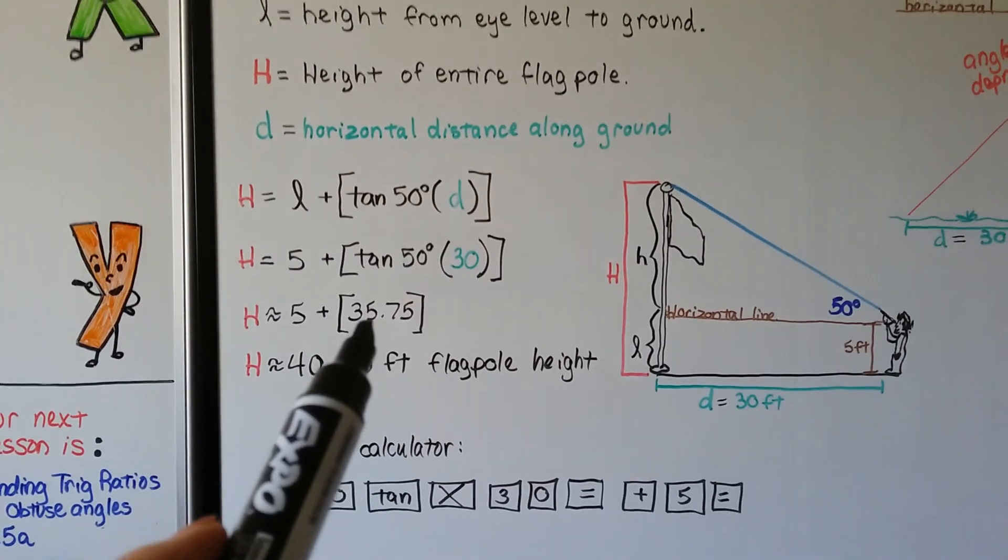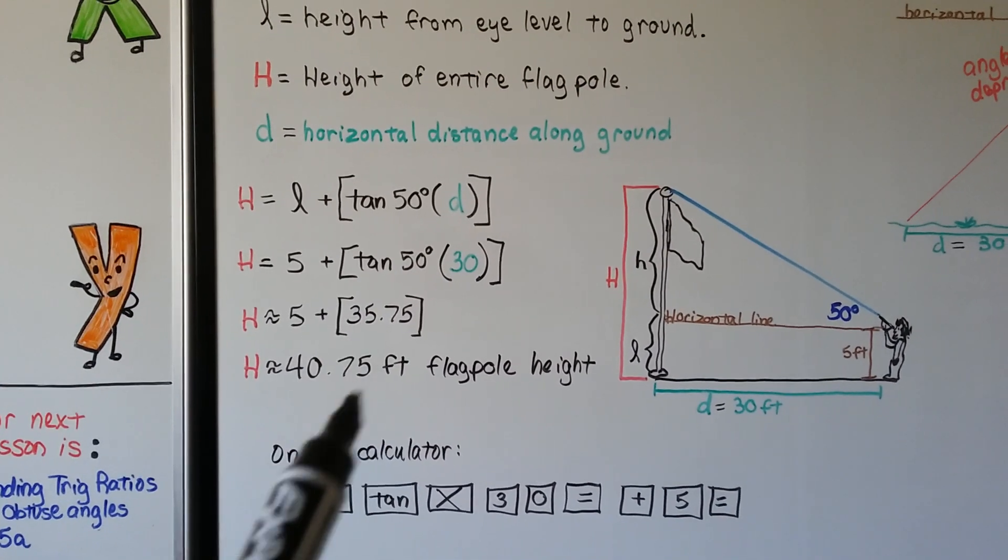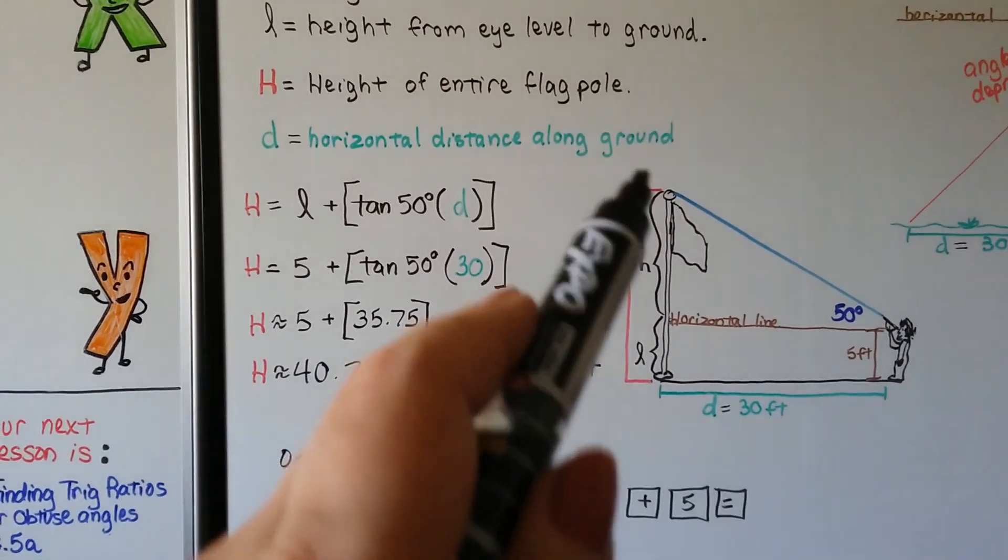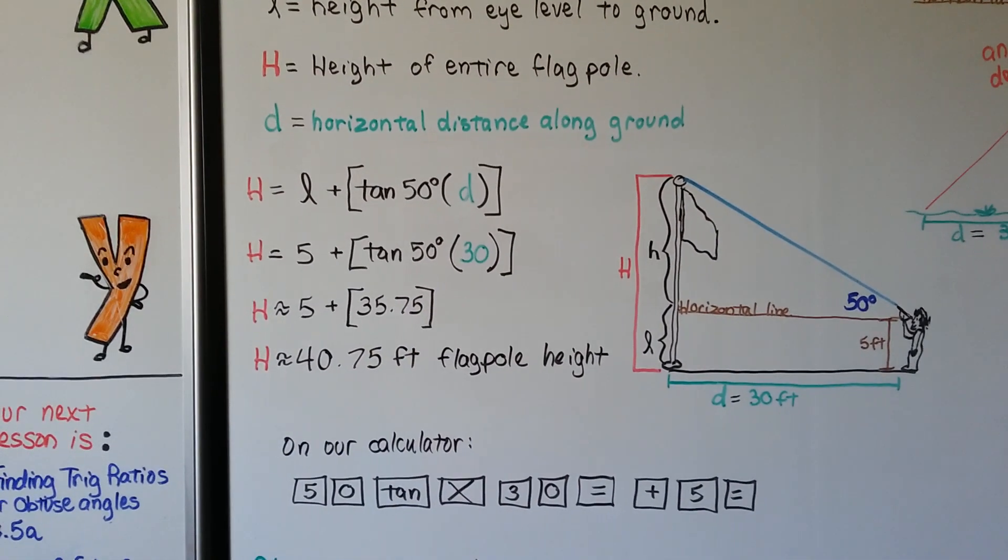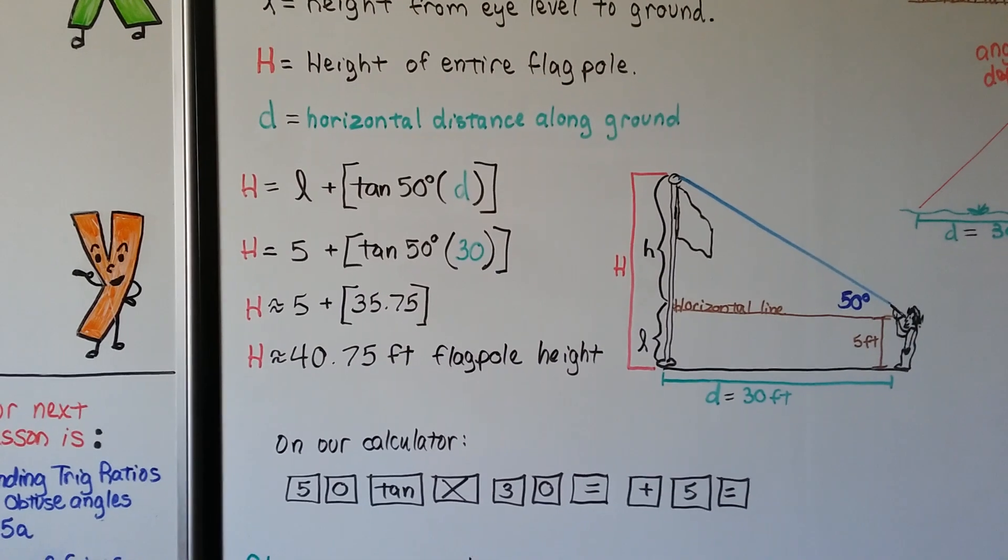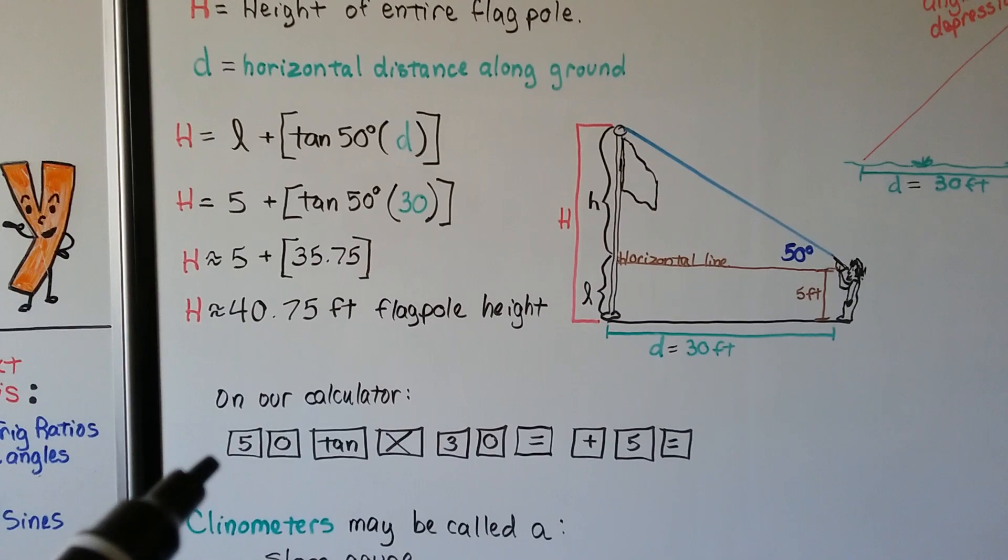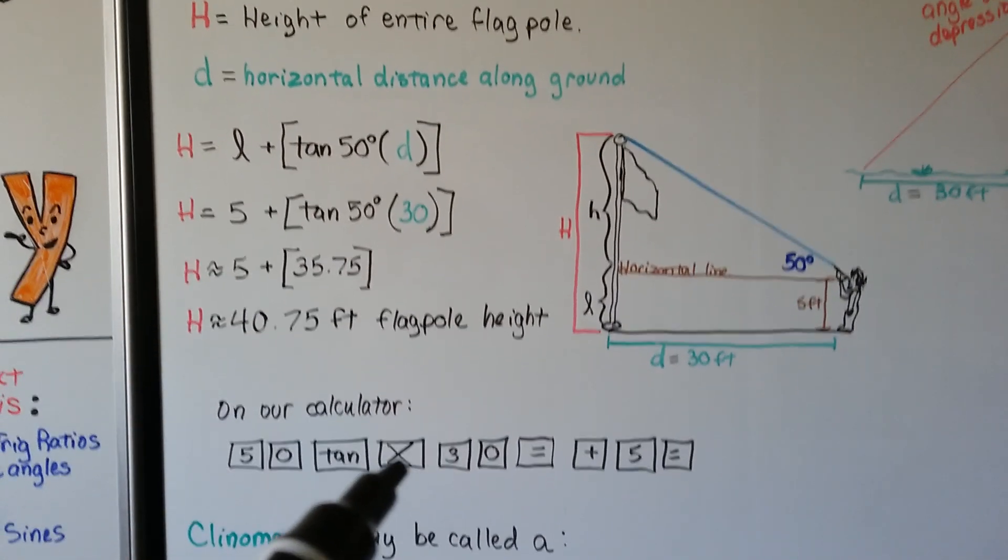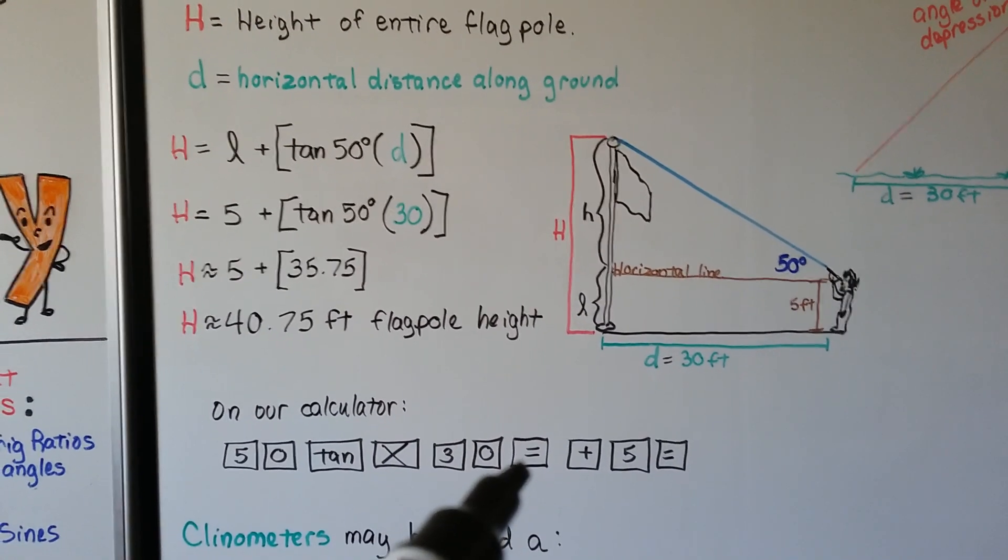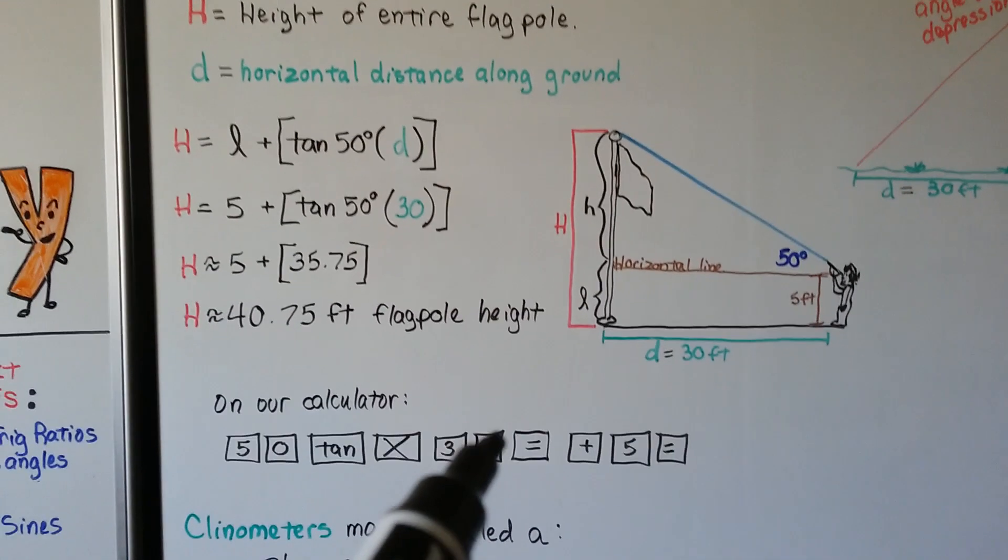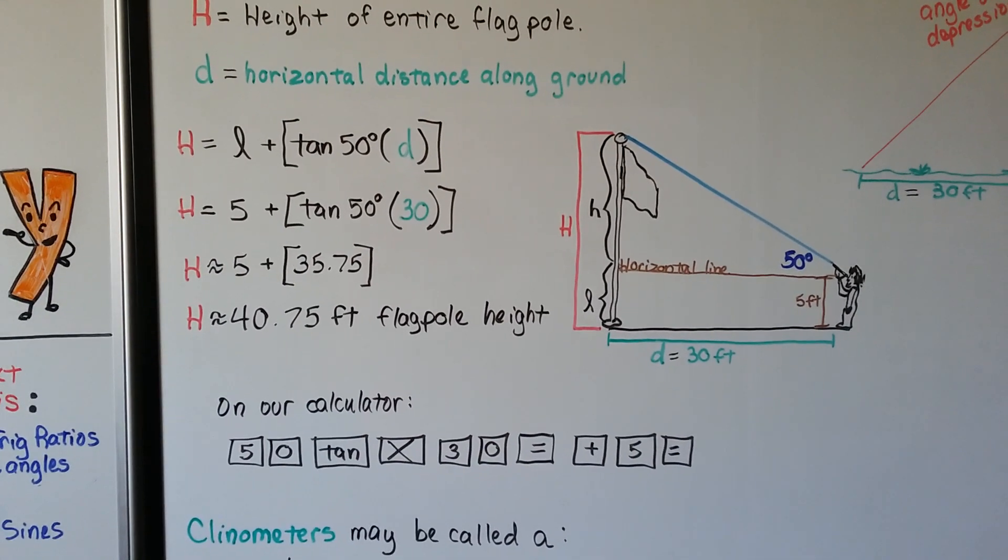When we do inside the brackets, we get 35.75. We add that 5 feet for this part of the flagpole to get the whole thing. And we find that it's approximately 40.75 feet for the flagpole height. On your calculator, you can hit 50 tangent multiplied 30 equals plus that extra 5 feet right here. You can also do the plus before this equal sign here.